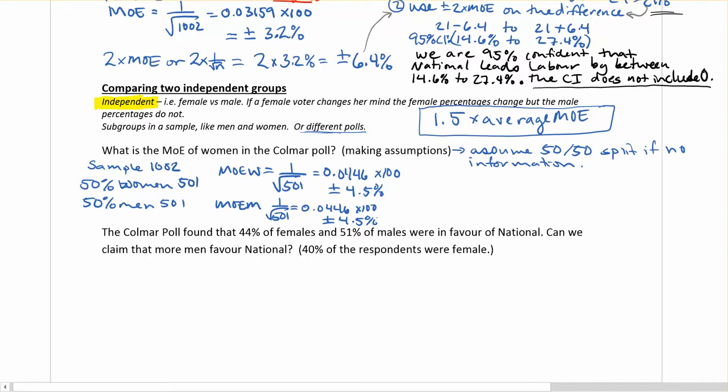So just to remind us about taking averages, our average MOE will be 4.5 plus 4.5. We add up the two different groups, and then divide that by 2. And in this case, it's 4.5, because the average of two identical things is just that same thing. So to calculate the MOE we would use in this problem, we now need to go 1.5 times the average. So that's 1.5 times 4.5, and we get plus or minus 6.75% in this case.